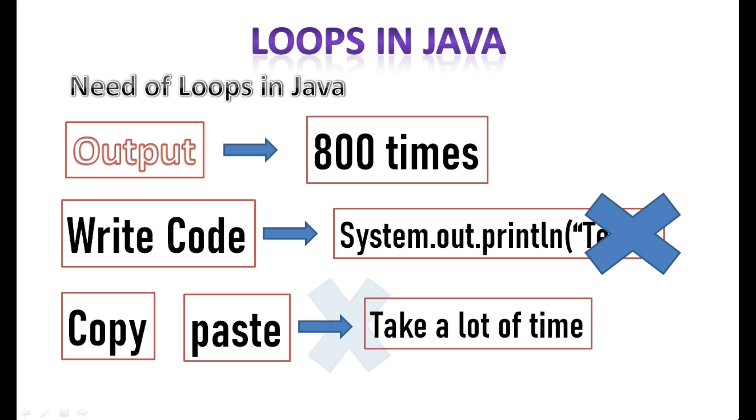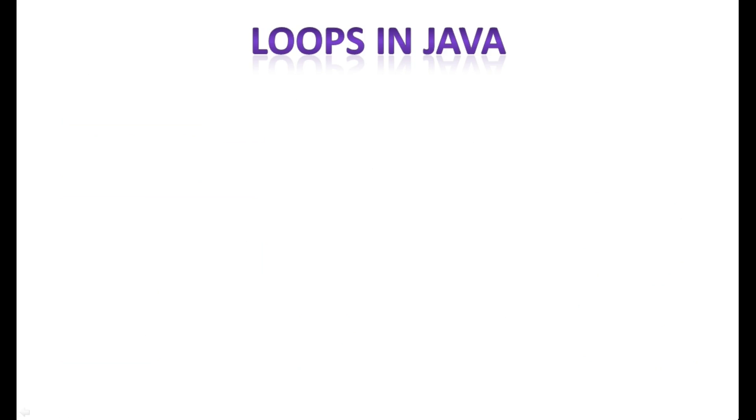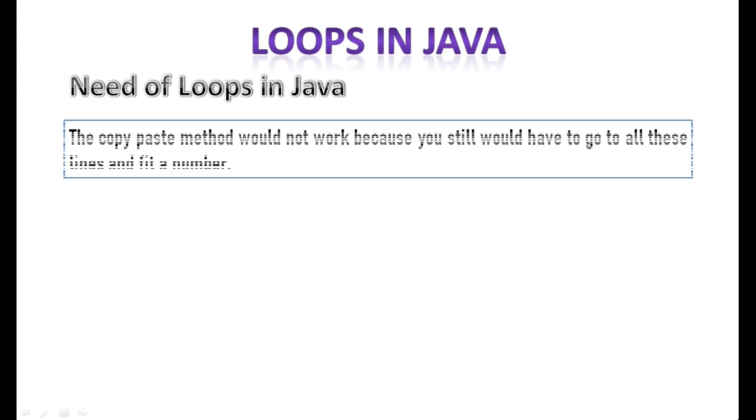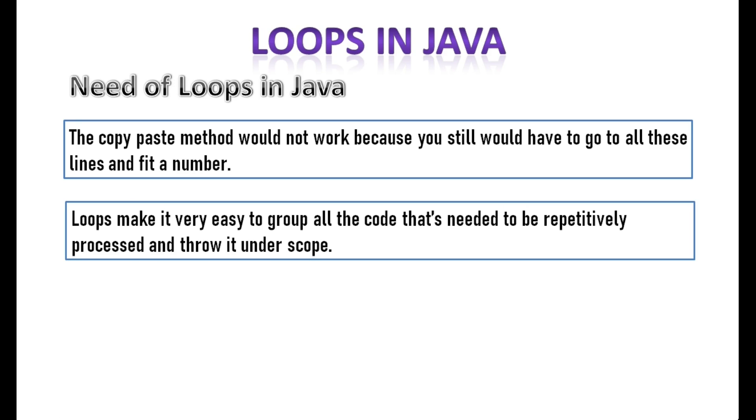Let us say that you have managed to copy paste the entire thing easily. Now if there is a different program which requires you to print the first 800 natural numbers, the copy paste method would not work, because you still would have to go to all these lines and fit a number. That's where loops come into play. Loops make it very easy to group all the code that's needed to be repetitively processed and throw it under scope. The loop does the remaining job.